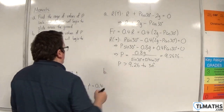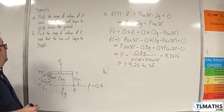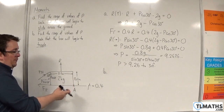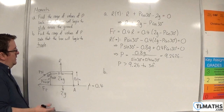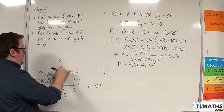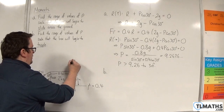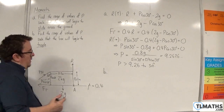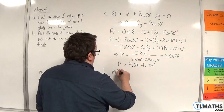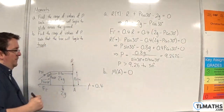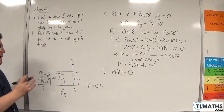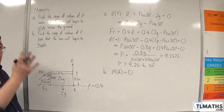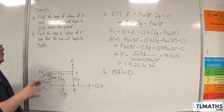Part B: find the range of values of P such that the box will begin to topple. If it starts to topple, it's going to start toppling around point A. That will be the point the box is in contact with the surface, so the normal reaction force needs to go through A. We're going to take moments about point A. If the total moment about A is 0, there's no turning effect. We work out what P is in that case, and if P is greater than that, there will be a turning effect and that creates the toppling motion.